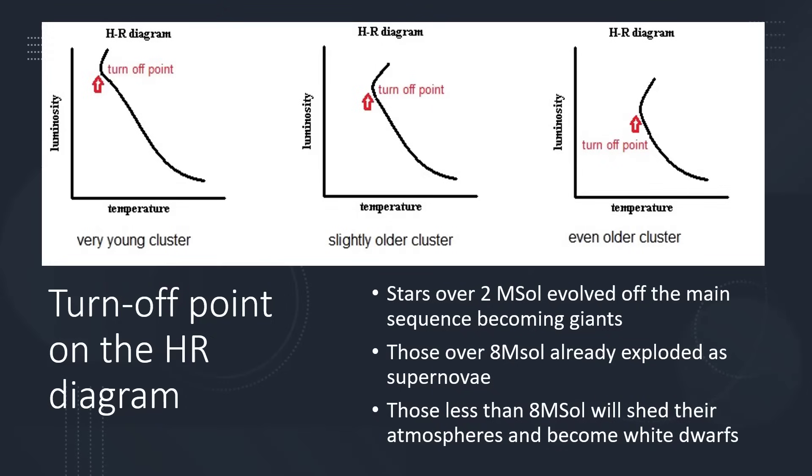The larger, more massive stars than that have already evolved off the main sequence, becoming giant stars as they run out of nuclear fuel in their cores and start going through the phases of converting heavier elements.